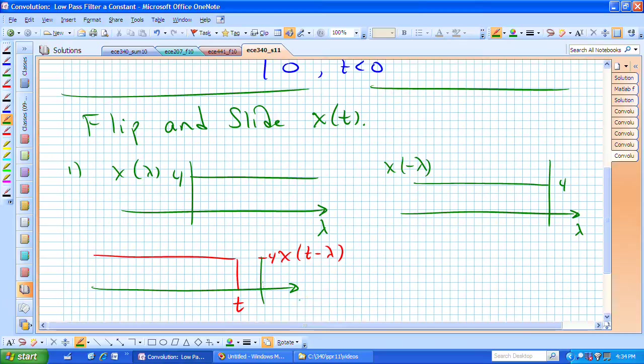It's going to be slid with this parameter t, and t is now at the rightmost edge of that flipped and slid waveform for our input, x of t minus lambda.